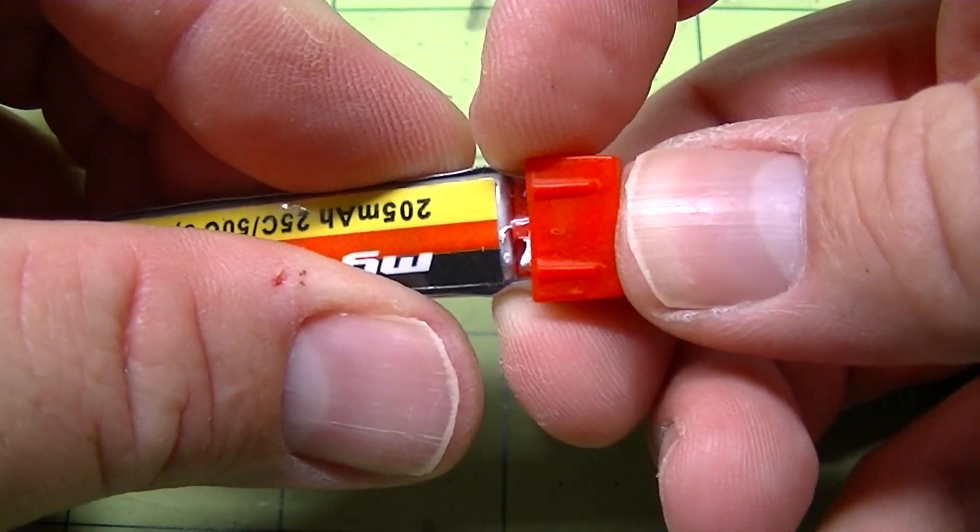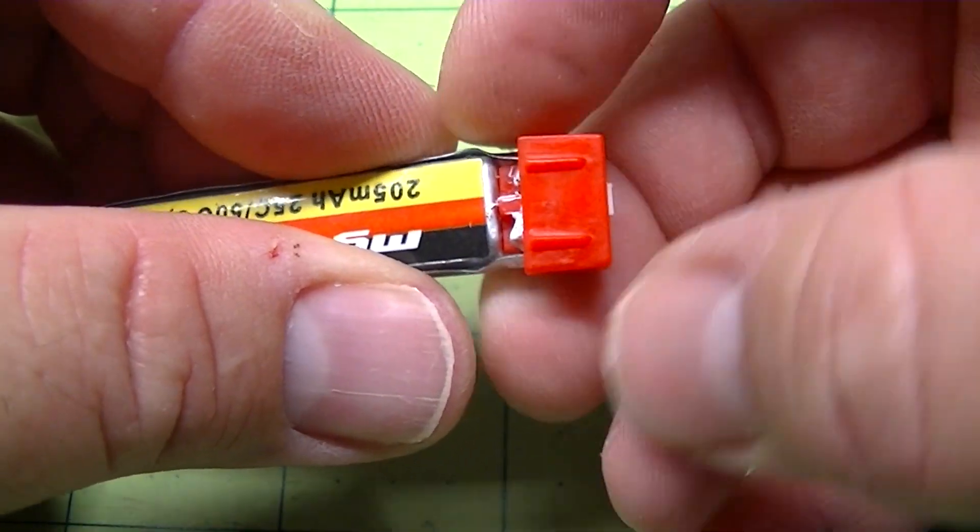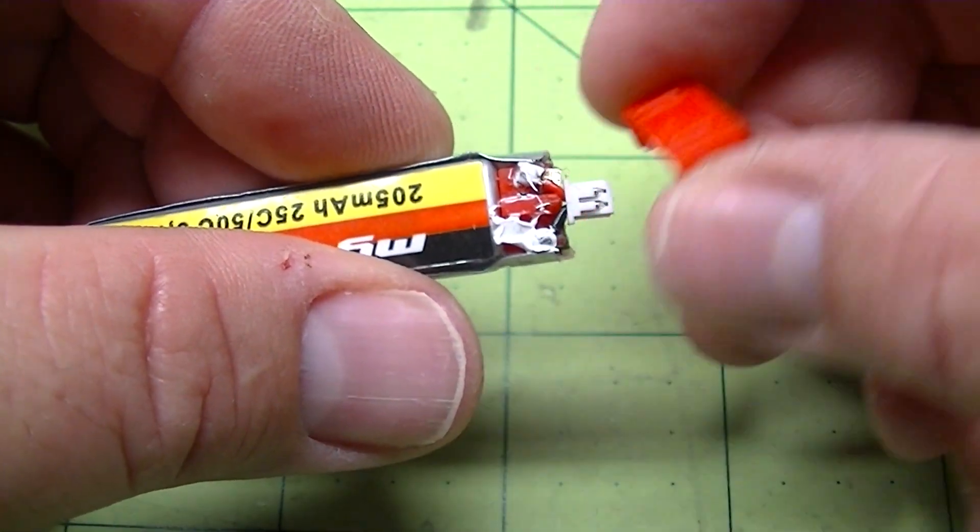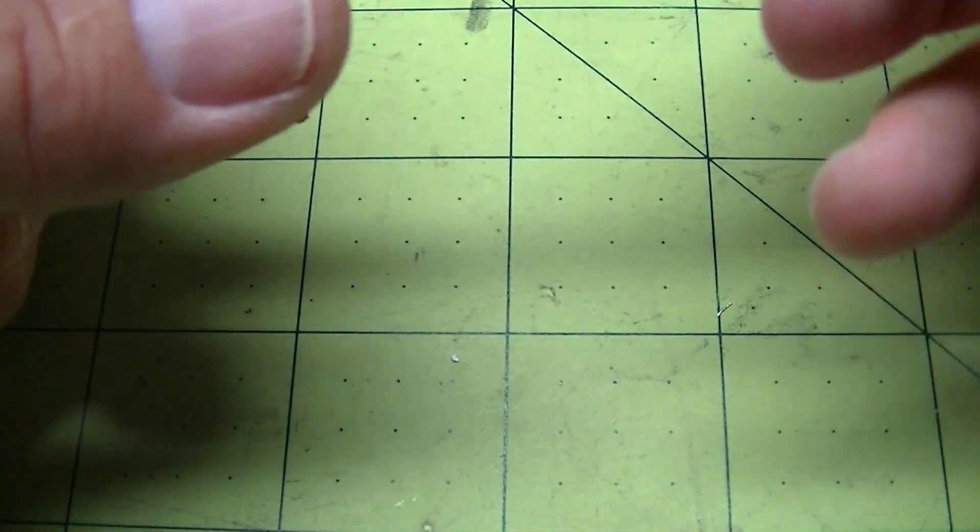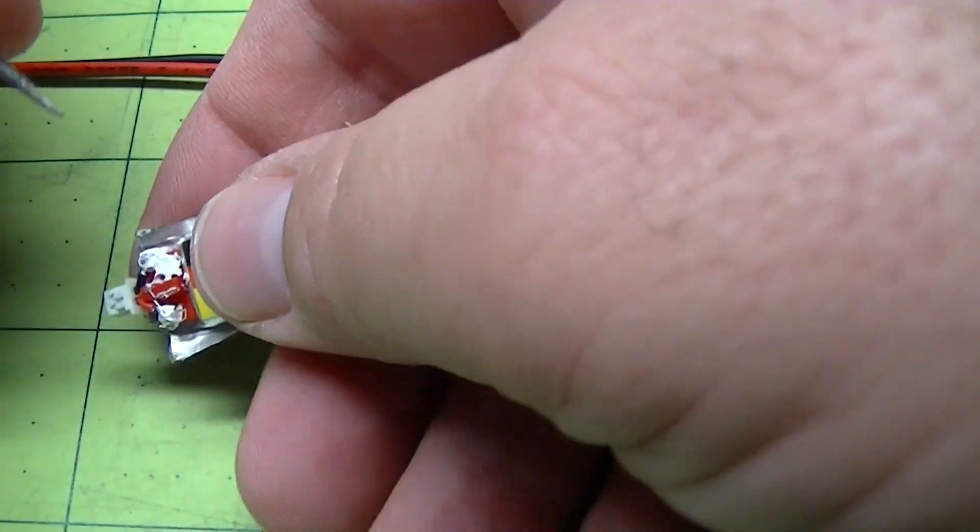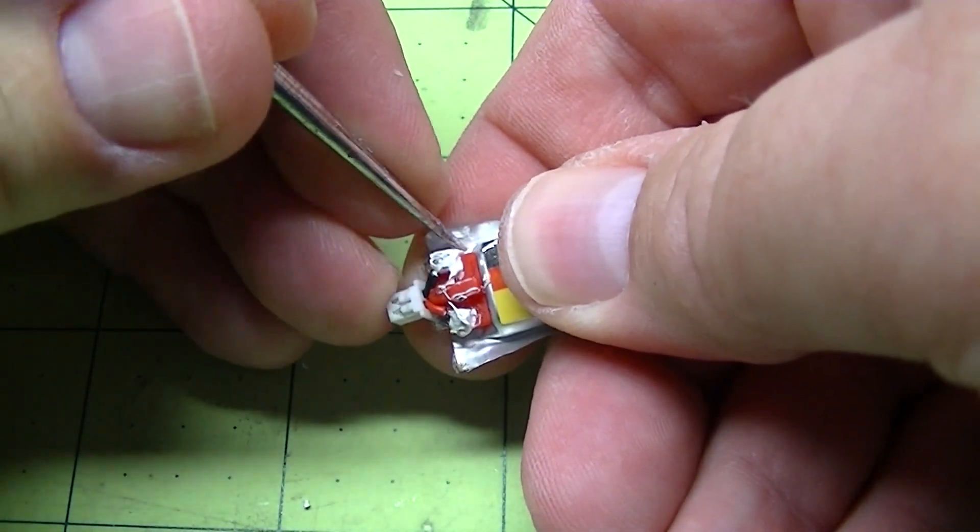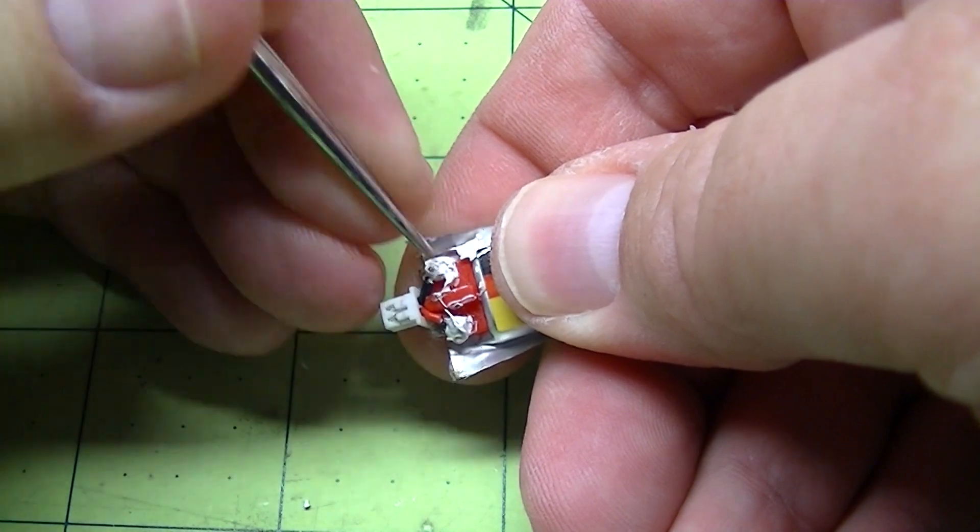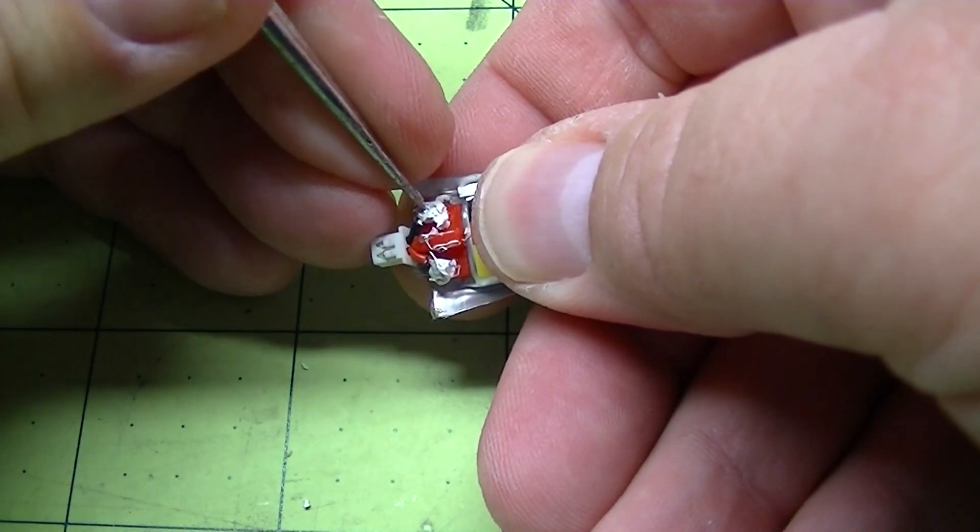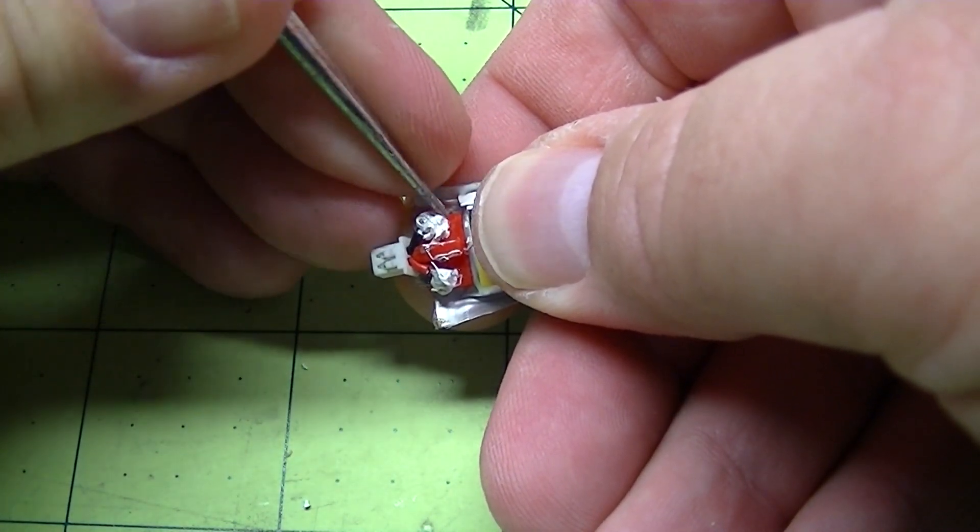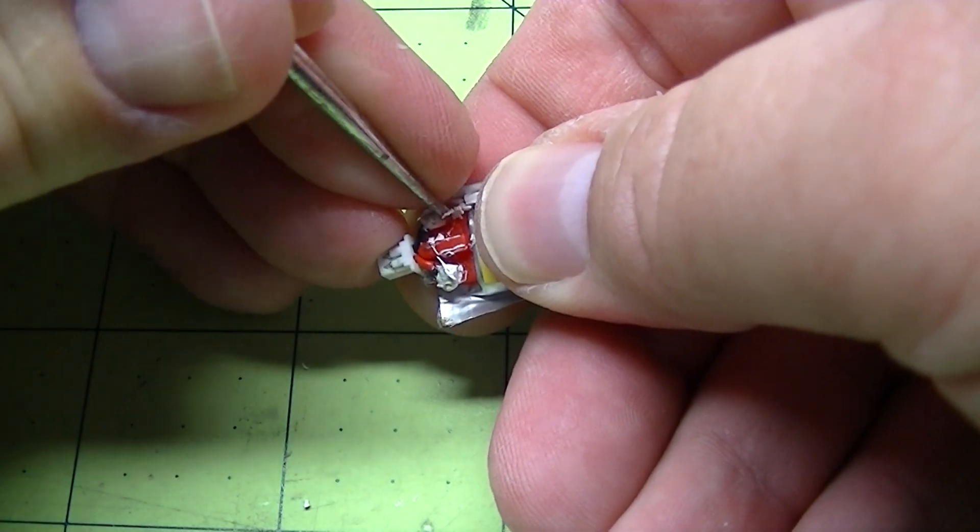From here I like to push in on the connector and pull the cap off. That way we can get that off without having an issue. This one doesn't have a lot of glue. And then from here you just want to pick out the silicone. When you go to heat it up with the iron that will help break that up a little bit more.